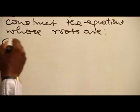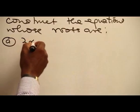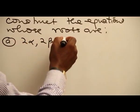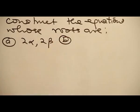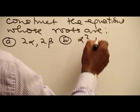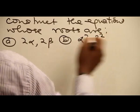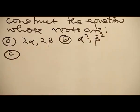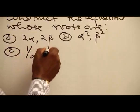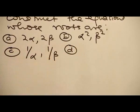A. 2 alpha, 2 beta. B. Alpha squared, beta squared. C. One over alpha, one over beta.